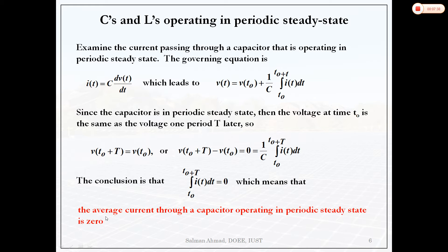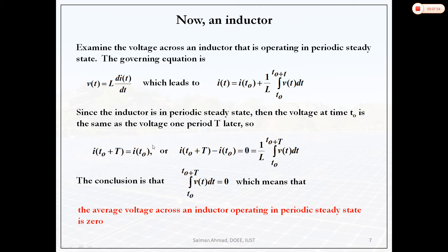This concept is used to analyze any DC-DC converter — buck, boost, buck-boost, or any type. For an inductor, voltage is L·di/dt. The current is initial current plus integral of voltage. In one time period, the average of that integral is zero. Therefore, the average voltage across an inductor operating in periodic steady state is zero, and the average current through a capacitor is zero.